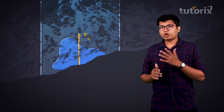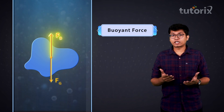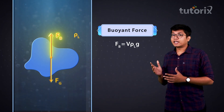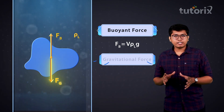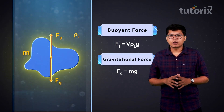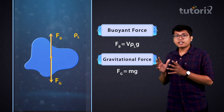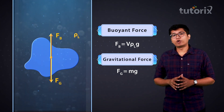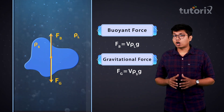Let's look at the forces acting on this body. The buoyant force is given by V × ρL × g, where ρL is the density of the liquid and V is the volume of the object. The gravitational force is given by M × g, where M is the mass of the object. We can simplify this and express it in terms of volume and density: the gravitational force equals V × ρS × g, where ρS is the density of the object.